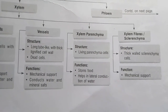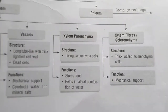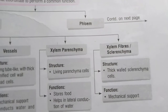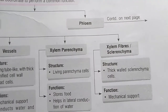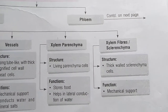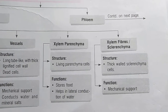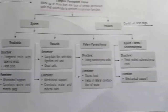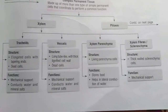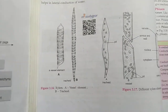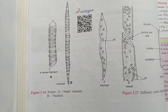The last part of xylem is xylem fiber, or sclerenchyma. It has a thick-walled sclerenchyma structure, and its function is to provide mechanical support to the plant. So, the four components of xylem are: tracheids, vessels, xylem parenchyma, and xylem fibers.